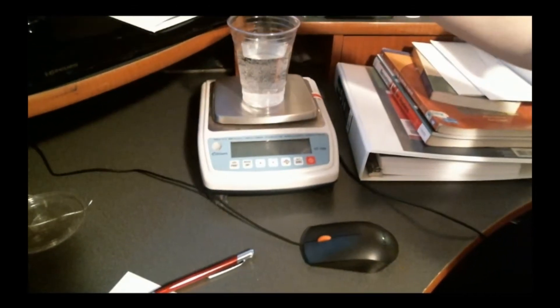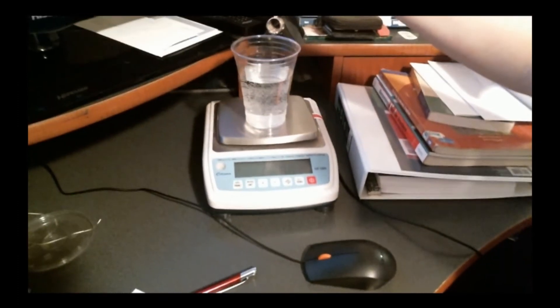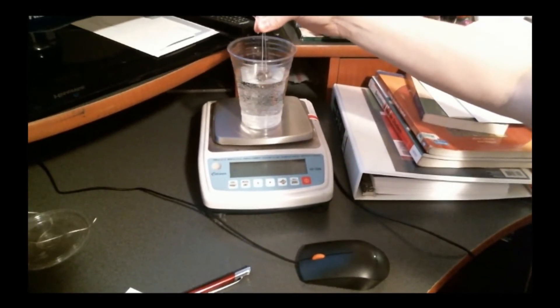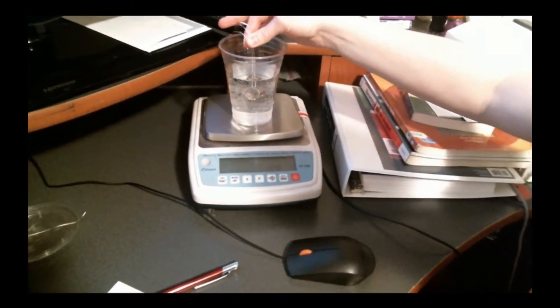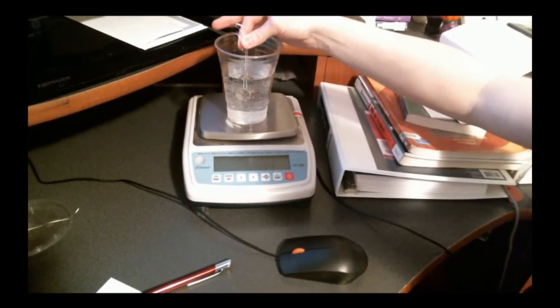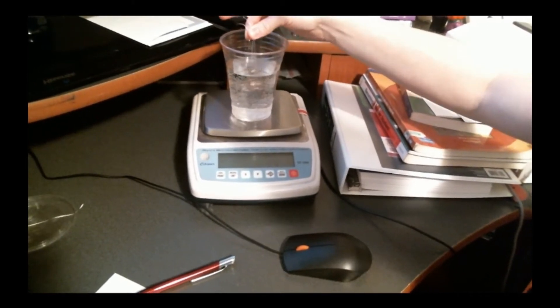And once I've got that zeroed, I can take my piece of jewelry and dip it into the water. Now that pushes the water up by the volume of the ring. We're trying to measure the volume of the ring to get a good density.